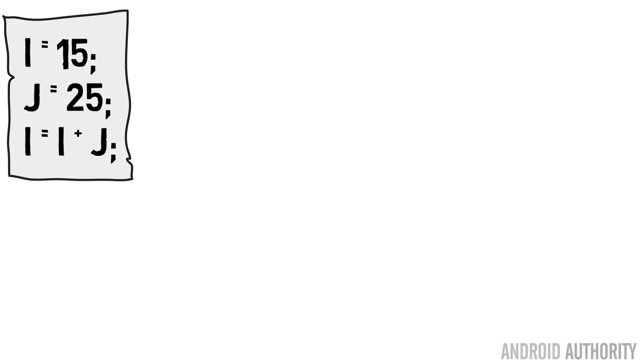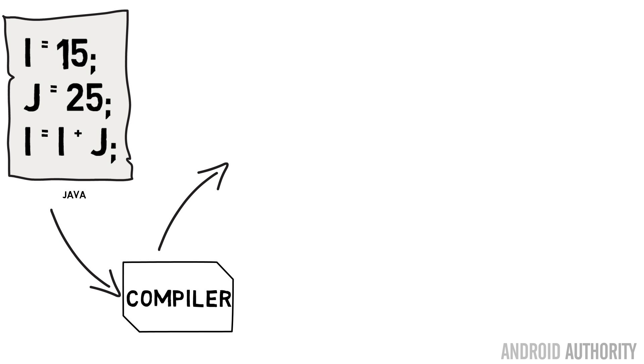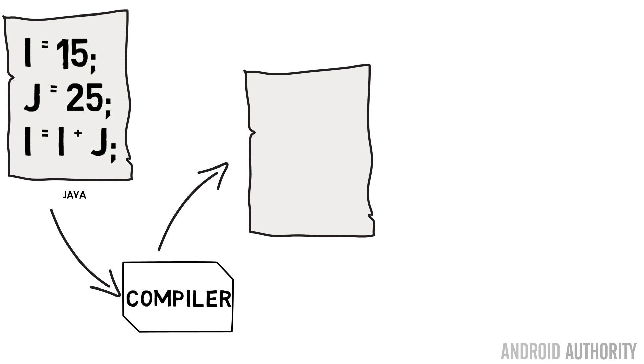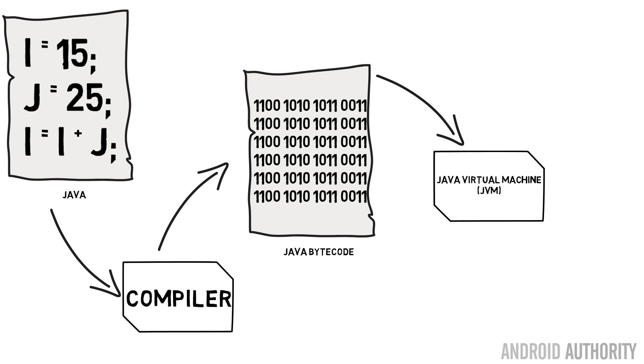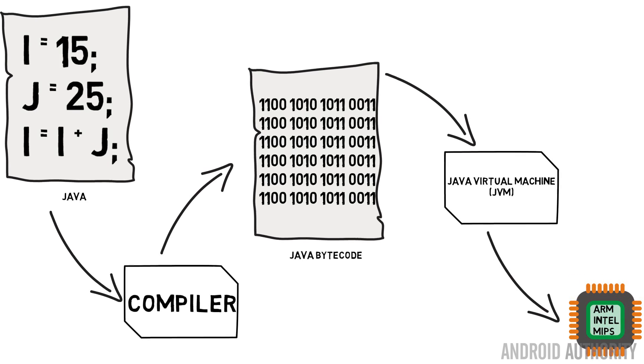There are key differences that affect the performance of programs written in C versus Java. Java programs are not compiled to machine code — they are compiled to an intermediate code called bytecode, Java bytecode. This bytecode is then executed on a Java virtual machine. To fulfill the goal of 'write once, run anywhere,' a JVM can be implemented on Linux, on Windows, on servers, on Android, and the same bytecode can run on that platform without needing to be recompiled.